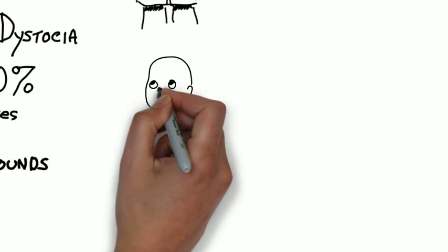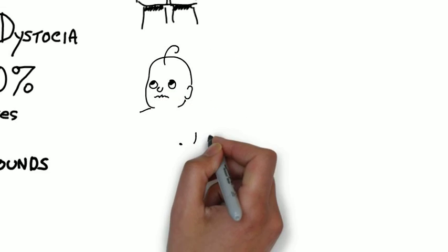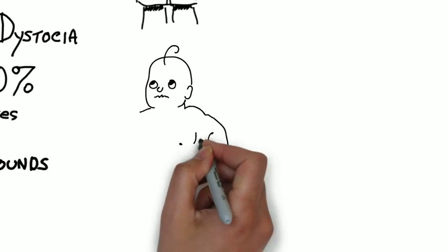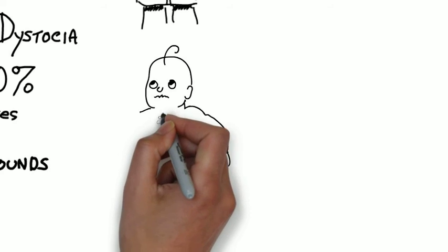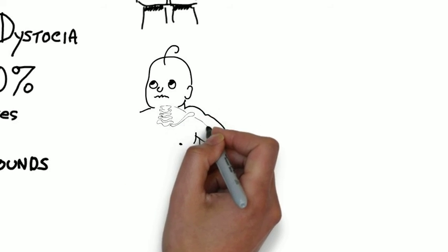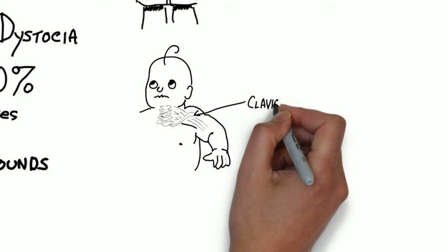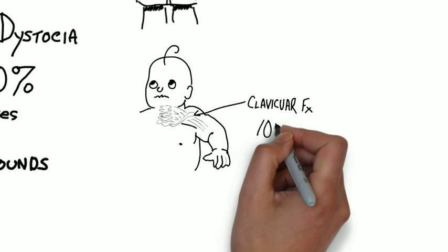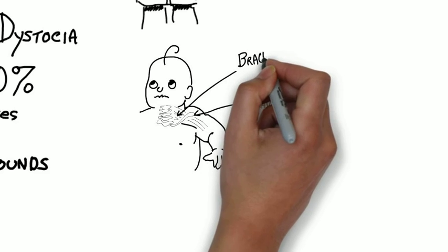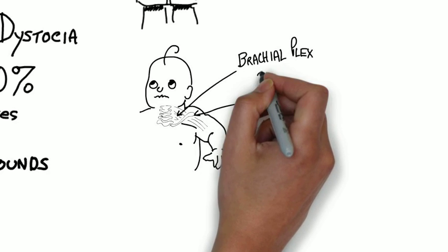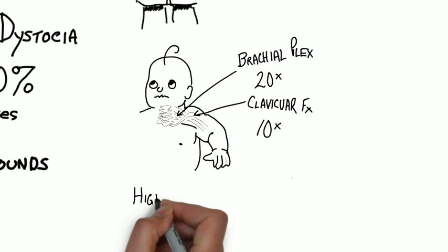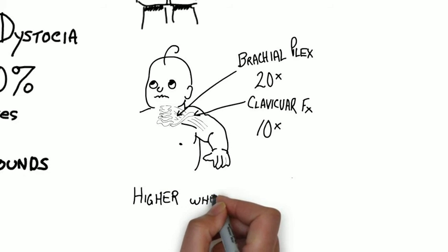How about the risks to the fetus? In a fetus weighing more than 4,500 grams, the risk of clavicular fracture increases 10 times, and the risk of brachial plexus injury, specifically C5, C6, or Erb-Duchenne paralysis, is 18 to 20 times higher. And the persistence of the injury increases the higher the birth weight.